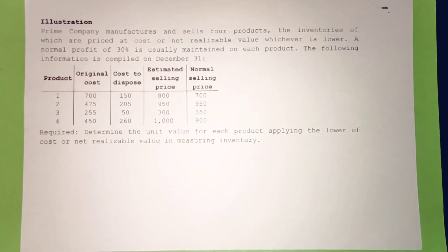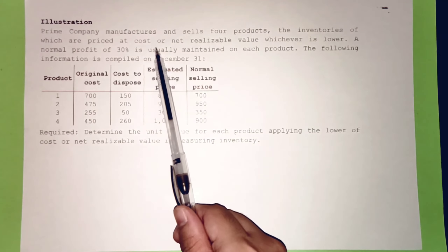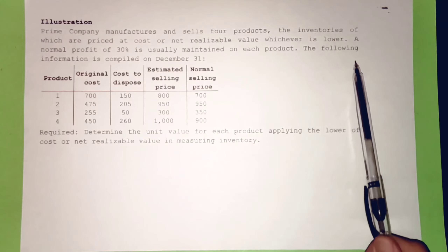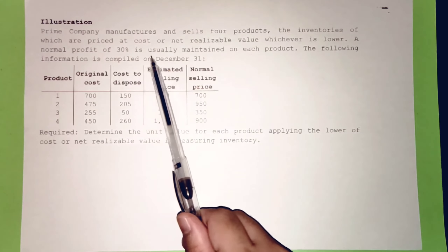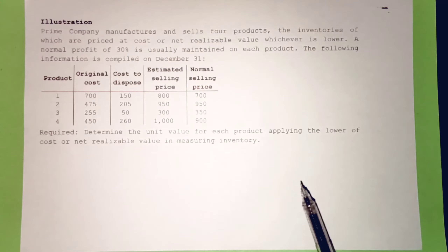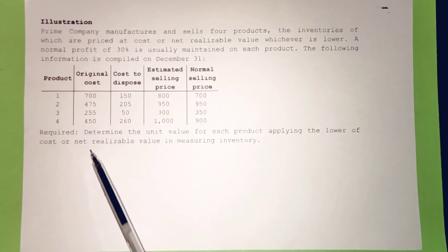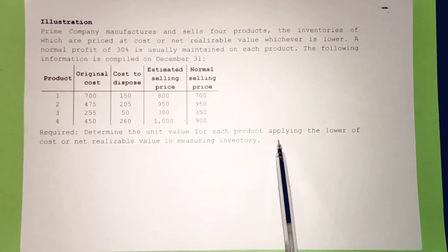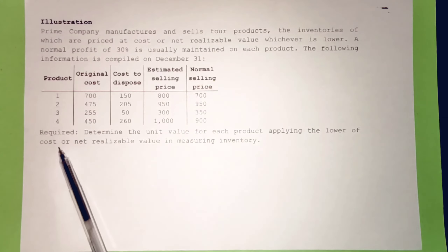Illustration: Prime Company manufactures and sells four products, the inventories of which are priced at cost or net realizable value, whichever is lower. A normal profit of 30% is usually maintained on each product. The following information is compiled on December 31. Requirement: determine the unit value for each product applying the lower of cost and NRV in measuring inventory.